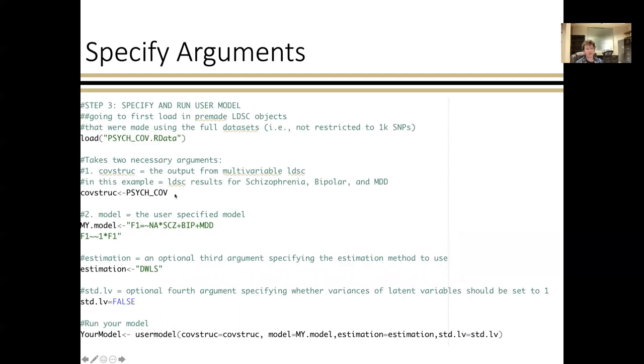So we're running a common factor model here. And we're telling Levon using this NA star that we want to freely estimate the first loading, and then we want to fix the variance of the factor to one. So we're using what's known as unit variance identification for this model. And the optional third argument is what estimation method you want to use. We offer DWLS and maximum likelihood, but the default is DWLS. And then another optional argument is std.lv, and that's whether or not you want to automatically specify that the variance is a latent variable set to one. Then you would run the model.